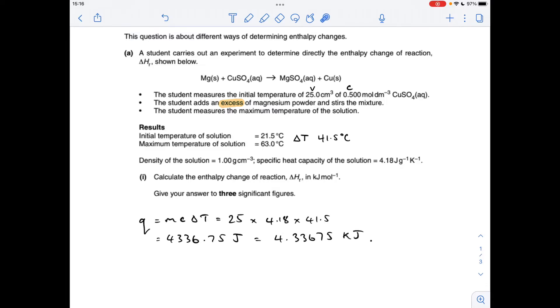So the first thing I want you to do is work out the Q value, the energy change for the solution. So obviously energy has gone into the solution from the reaction and we work that out from the equation MC delta T. So M is the mass of the solution that's heated up, C is its specific heat capacity, and delta T is the temperature change.